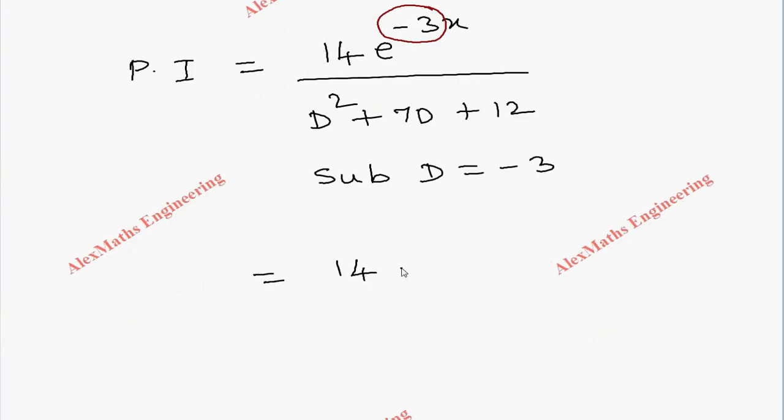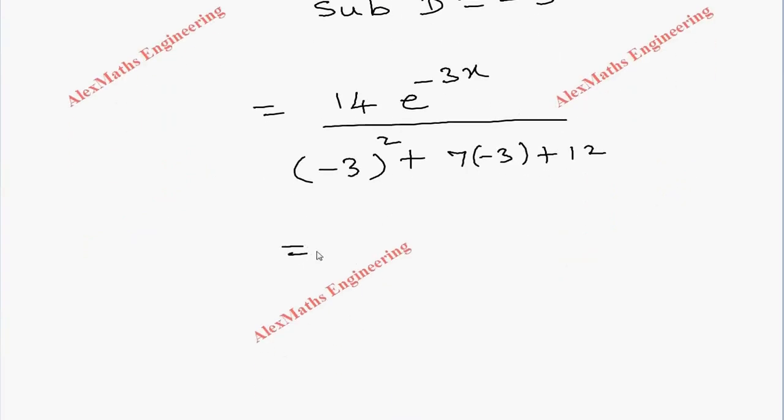The denominator becomes 0. The first term is 9, the last term is 12, so 9 + 12 is 21, minus 21 is 0.